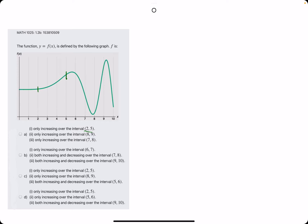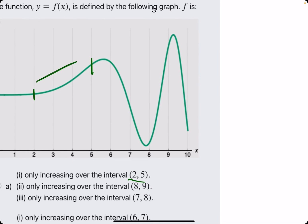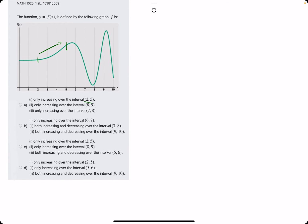So, between 2 and 5, we are analyzing whether it's increasing or decreasing. It appears to be increasing because the y values are going up from left to right over that interval.